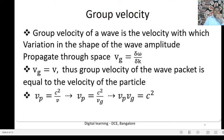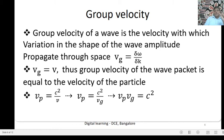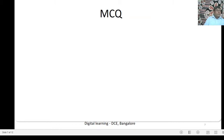Phase Velocity is equal to C² divided by V, where V is the particle velocity. That particle velocity equals Vg. Therefore, Phase Velocity into Group Velocity is equal to C². The product of Phase Velocity and Group Velocity equals C².